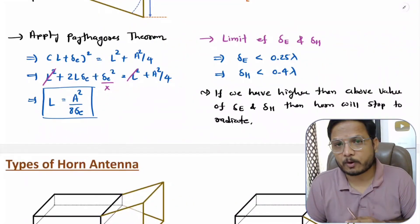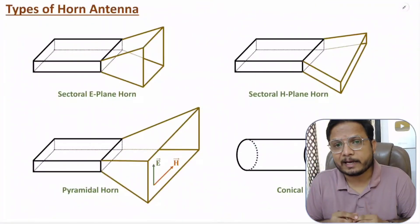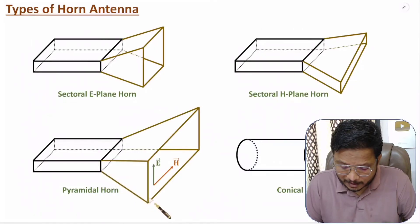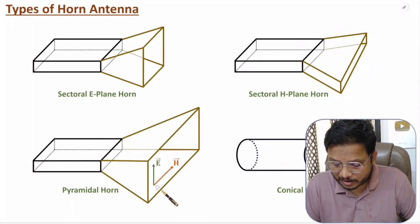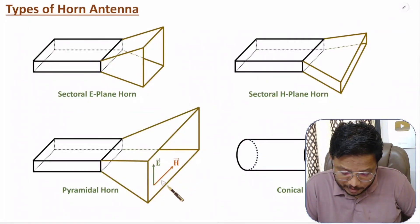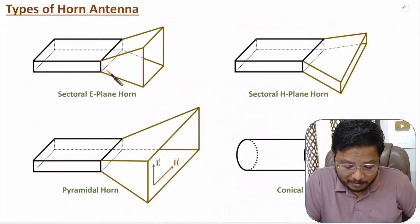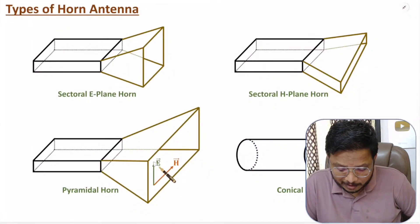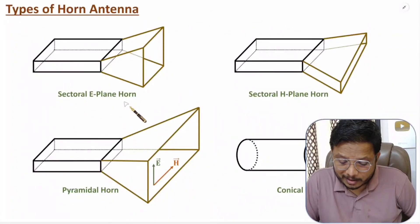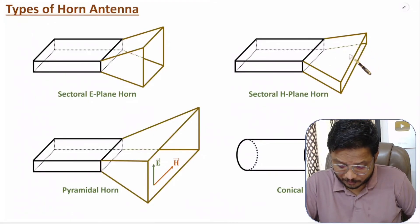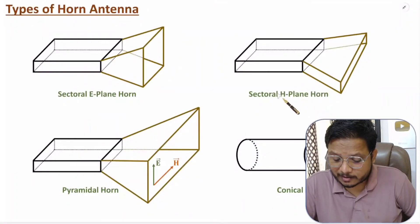Types of horn antenna are based on how flaring is provided. In a pyramidal horn antenna, flaring is provided in both vertical and horizontal dimensions — vertical associated with the electric field and horizontal with the magnetic field. In a sectoral E-plane horn, flaring is provided with vertical dimensions only, since vertical is associated with the electric field. In a sectoral H-plane horn, flaring is provided with horizontal dimensions only, while vertical dimensions remain constant, since horizontal is associated with the magnetic field.